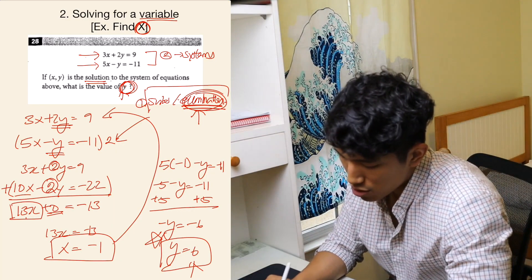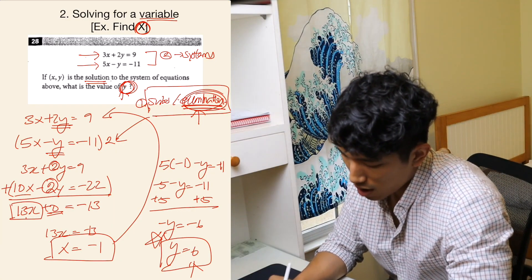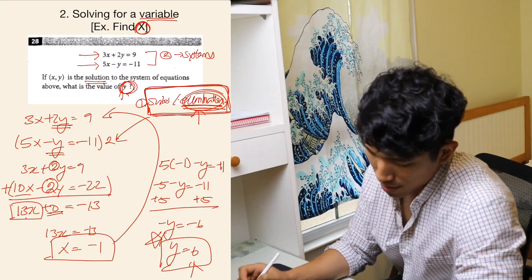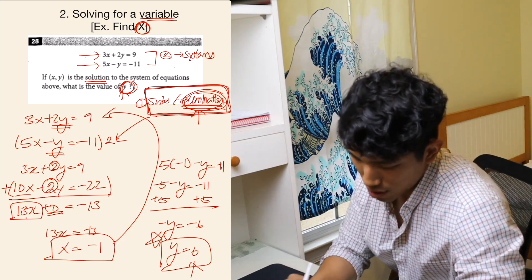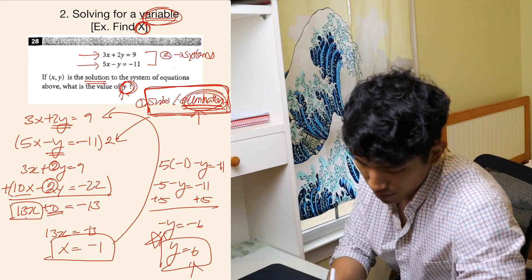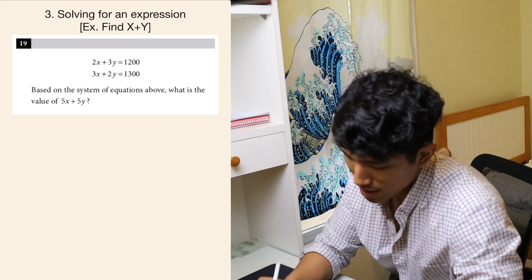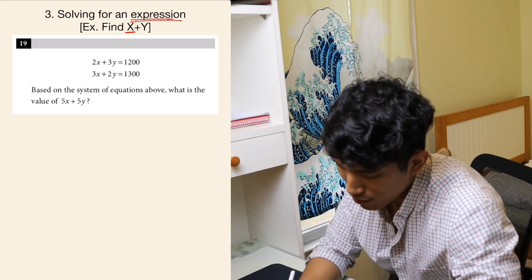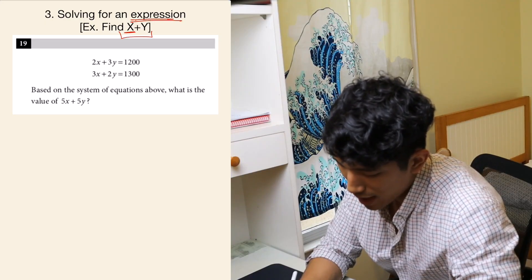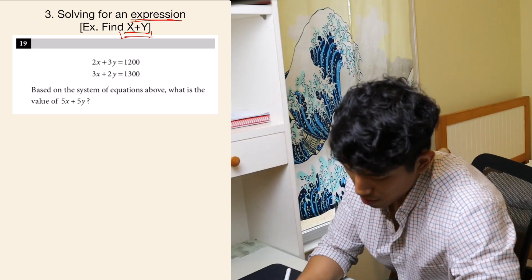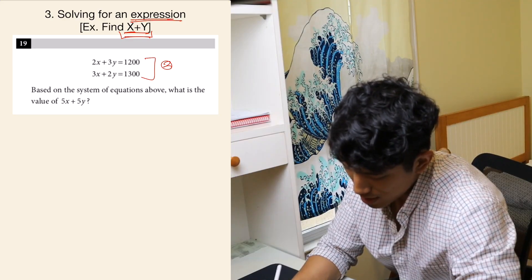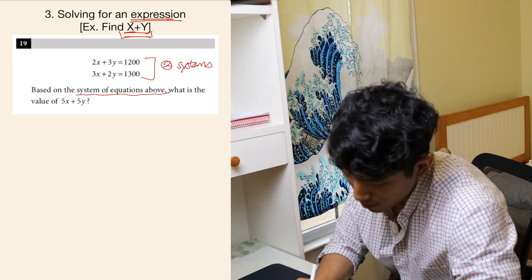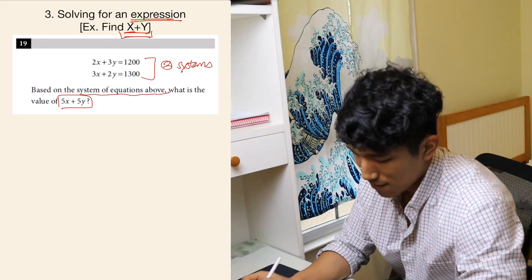Elimination tends to be quicker and simpler than substitution, but there are some questions where you must use substitution, so you want both in your toolbox. That's how you solve the second type. The third type is solving for an expression — not a single value, but a full chunk like 5x plus 5y.